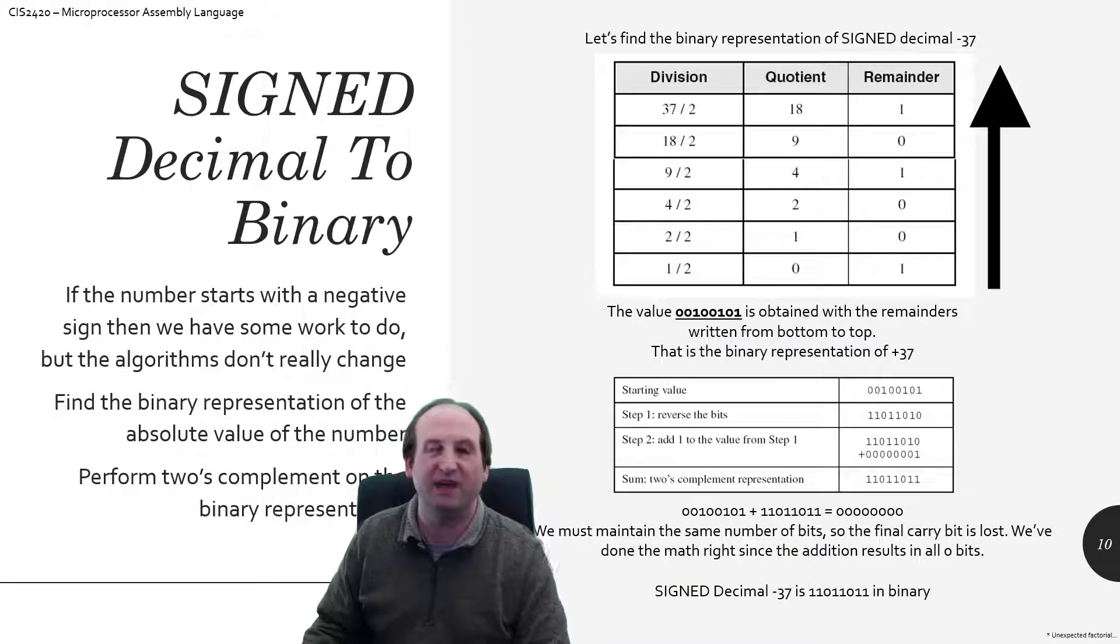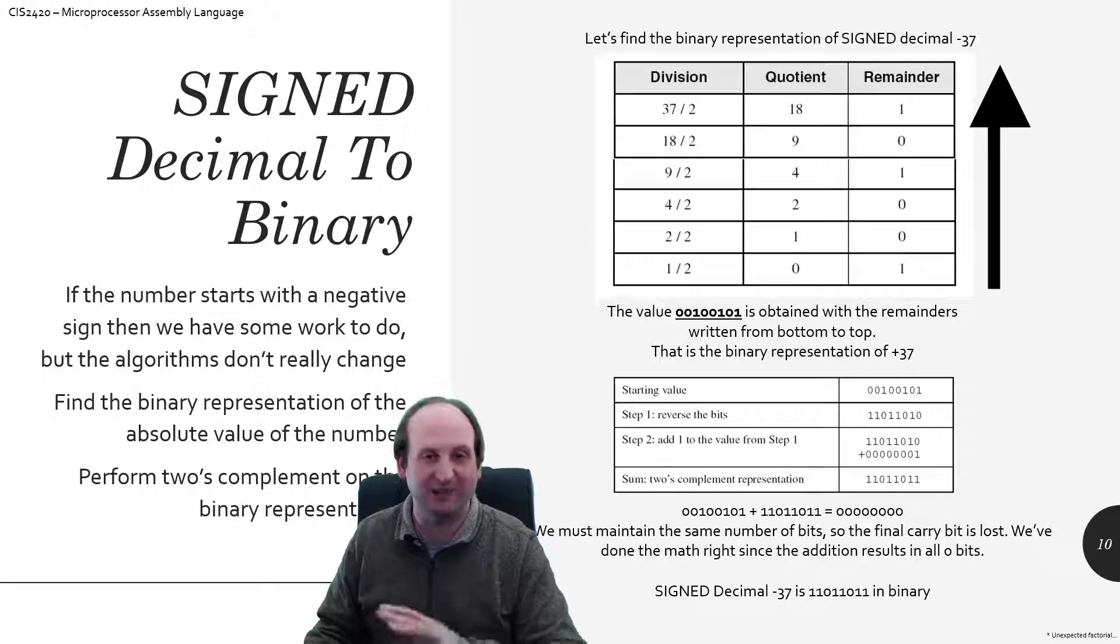If I hand you the number negative 37 and I tell you convert that from decimal into binary, well, what do you do? First step is to forget about the negative for the moment, because we can work the additive inverse, the two's complement, later.